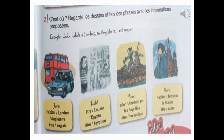Exercice numéro 2. C'est où ? Regarde les dessins et fais des phrases avec les informations proposées. Exemple : Jean habite à Londres, en Angleterre. Il est anglais.